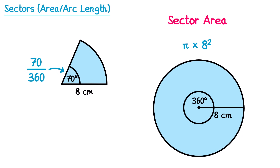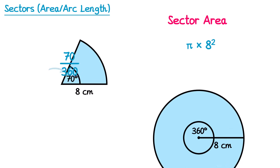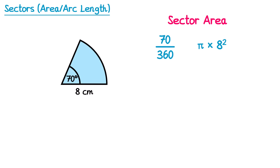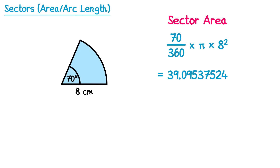So this is the fraction of the area that we need. All we do is multiply the area of the circle formula, pi times 8 squared, by this fraction, 70 over 360. Typing this into a calculator gives us this number, which rounded to 1 decimal place will be 39.1. Since it's area, its units will be centimetres squared.